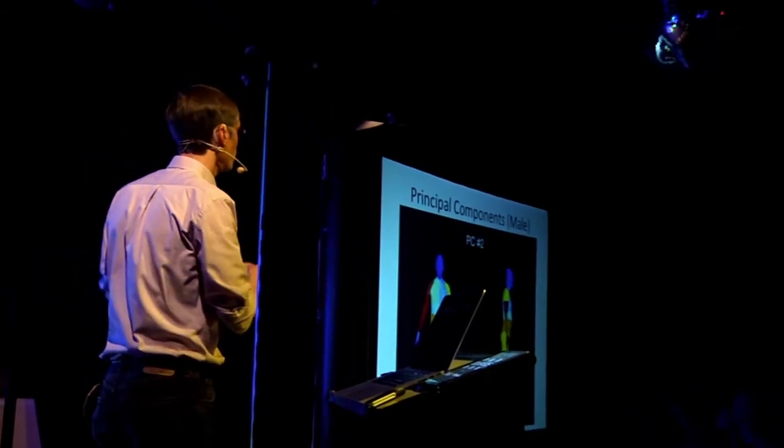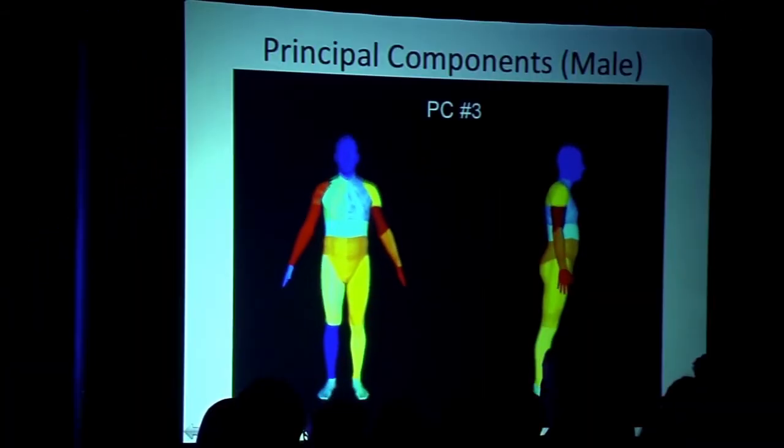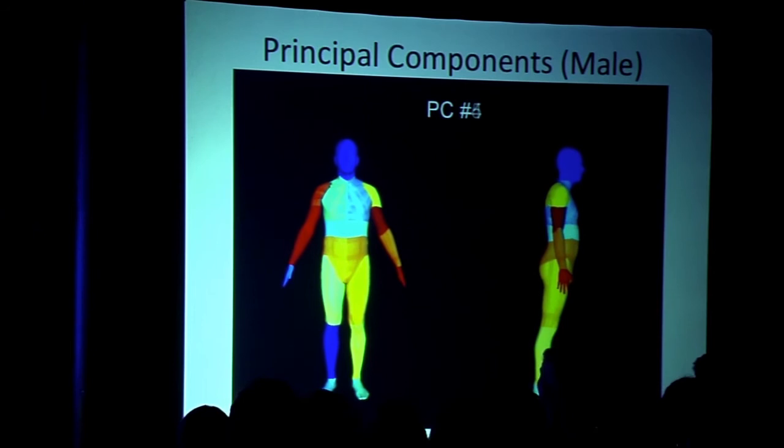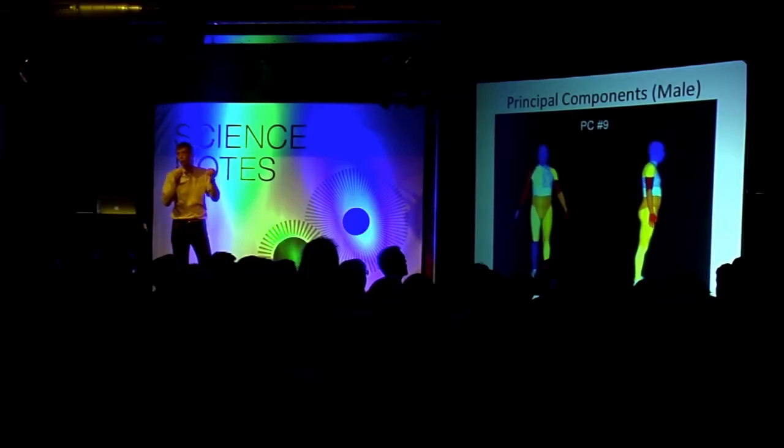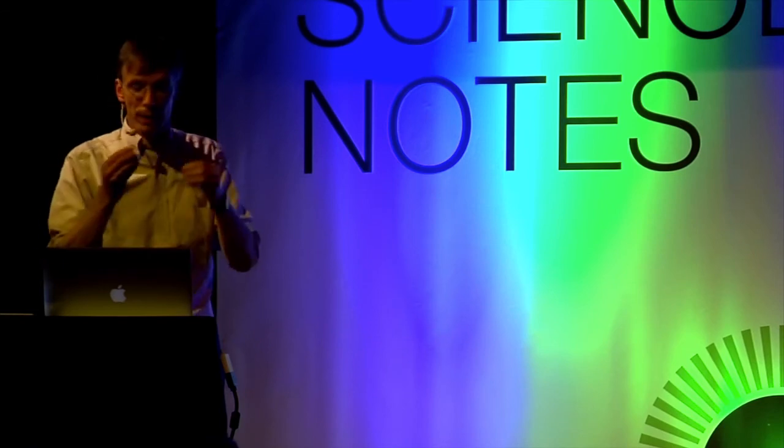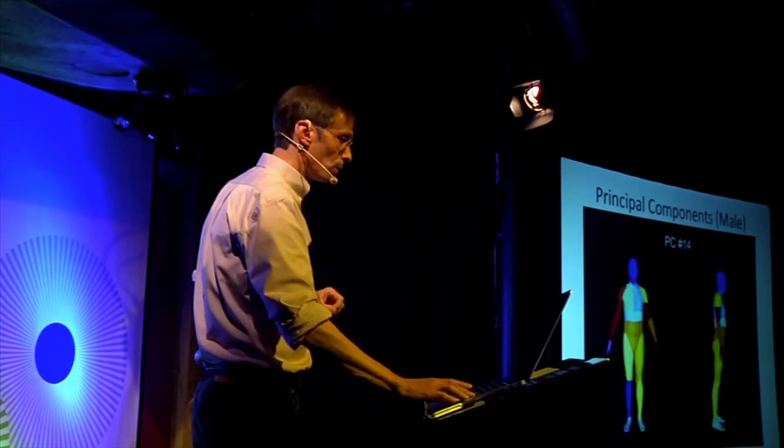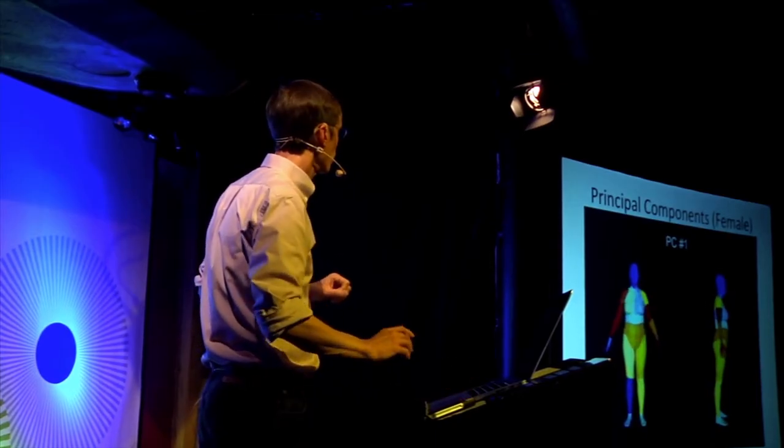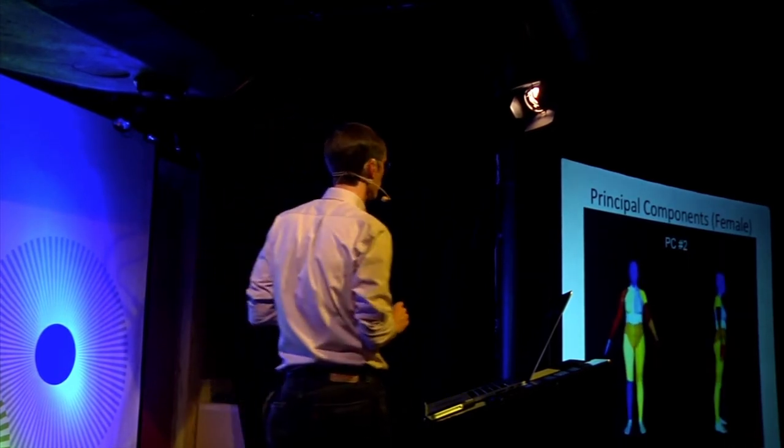But then, once we know the average, we can compute how we all deviate from the average. And so, each principal component I'm showing you here captures something about how body shape varies. The first couple ones capture things like height and weight. Those are the main differences. But then, there's all little variations about whether you have a narrow waist and a short torso, or a short waist and a narrow torso. Here's the female ones.